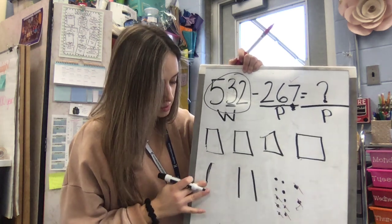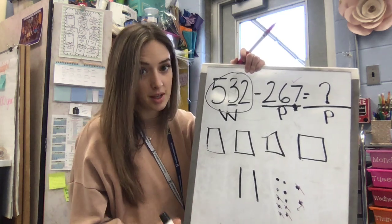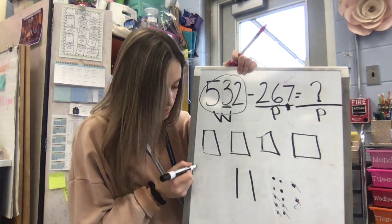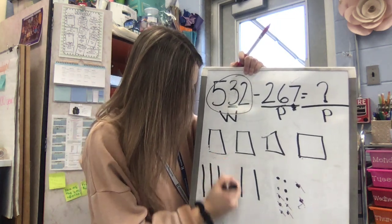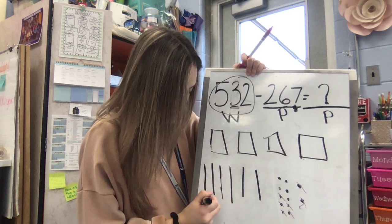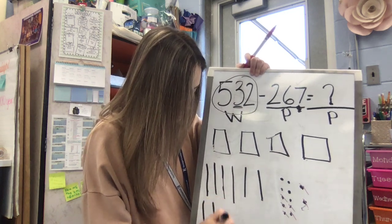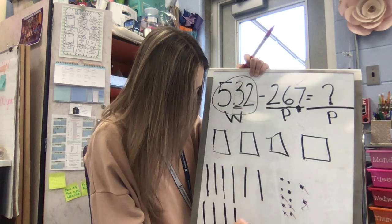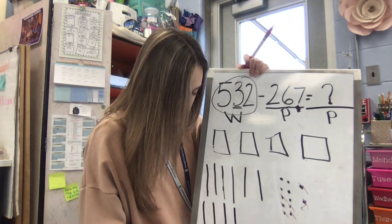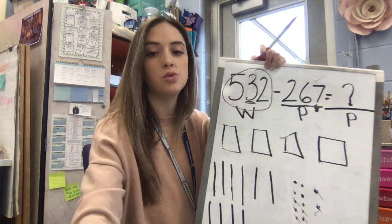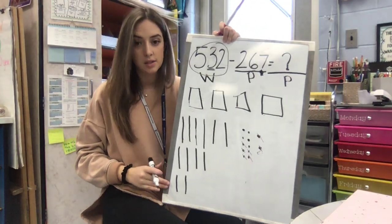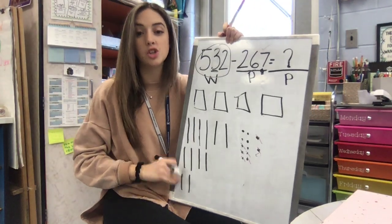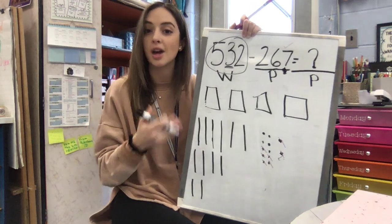So let's erase this 100 and replace it in the form of tens. So 10, 20, 30, 40, 50, 60, 70, 80, 90, 100. So I need to draw 10 tens for a hundred. I didn't change my number. I exchanged. I regrouped.